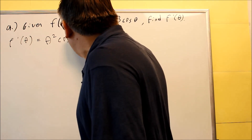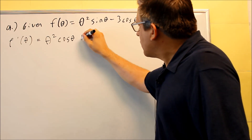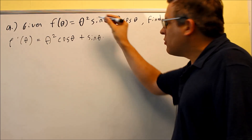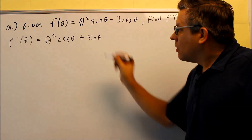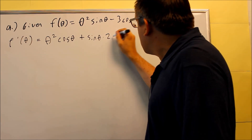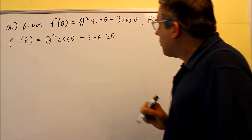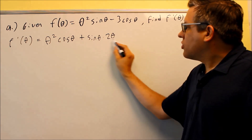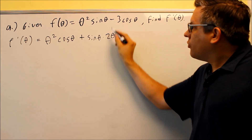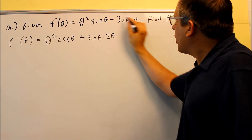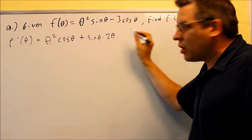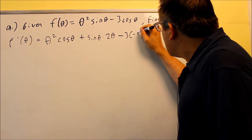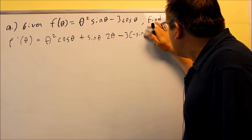Plus the second thing, sine theta, times the derivative of the first — theta squared. The two comes down, subtract one from the power and you get two theta. So these first two terms are the derivative of this part, but we still have to do the derivative of the second part. So we're going to do minus three, and then the derivative of cosine is negative sine theta.